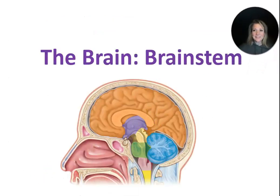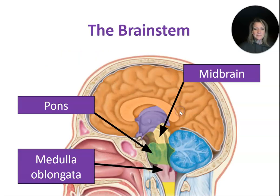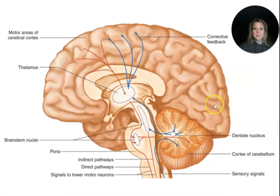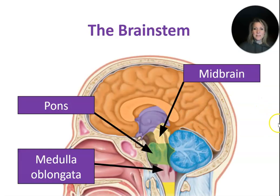Now let's talk about the brainstem. The brainstem consists of the midbrain, the pons, and the medulla oblongata.